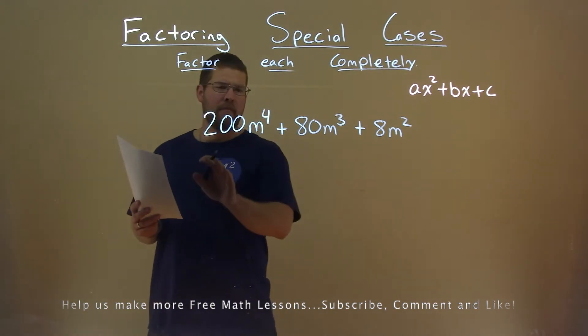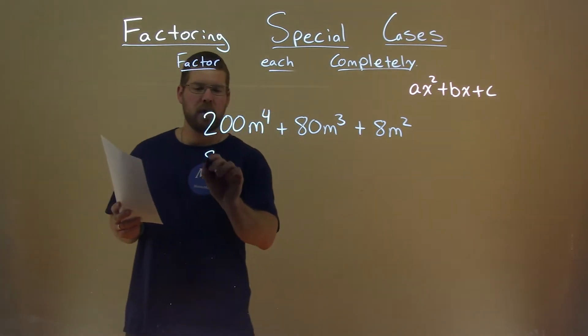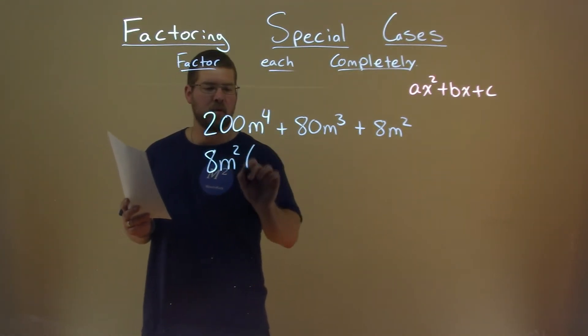But I want to see if I can pull out a common factor right from the beginning. 8m squared actually goes into all parts, so if I pull out an 8m squared, what am I left with?